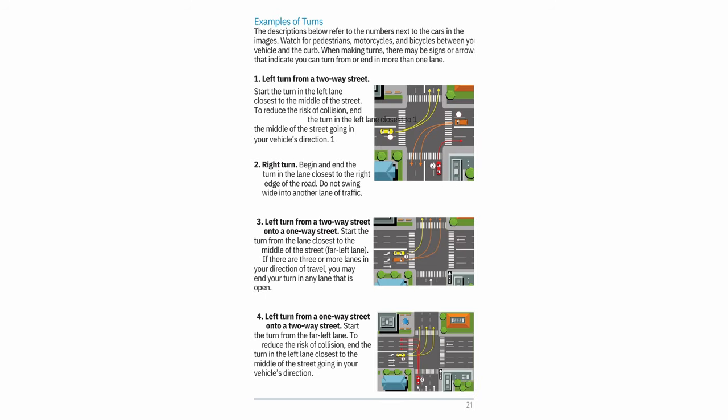Examples of turns: 1. Left turn from a two-way street — start in the left lane closest to the middle of the street, and end in the left lane closest to the middle going in your direction. 2. Right turn — begin and end in the lane closest to the right edge; do not swing wide. 3. Left turn from a two-way street onto a one-way street — start from the far left lane; if three or more lanes go in your direction, you may end in any open lane.